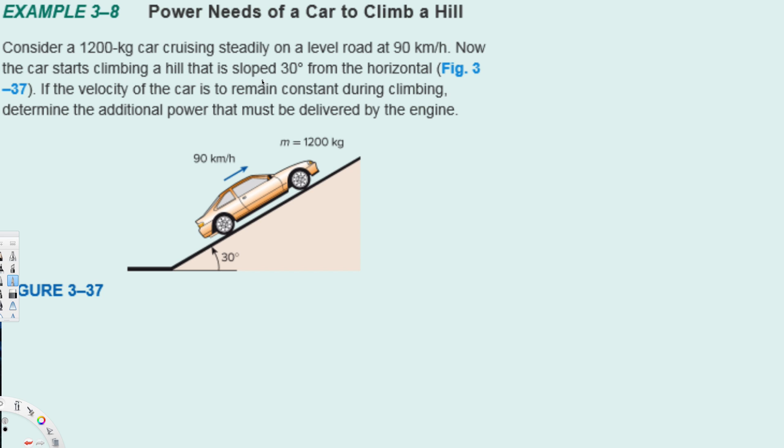Now the car starts climbing a hill that is sloped 30 degrees from the horizontal. If the velocity of the car is to remain constant during climbing, determine the additional power that must be delivered by the engine.